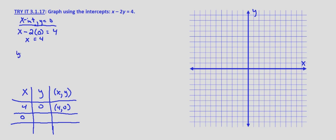Now for the y-intercept, that's when x equals 0. So 0 minus 2y equals 4. So that's just negative 2y equals 4. We divide both sides by negative 2 and we get y equals negative 2. So the y-intercept is 0, negative 2.